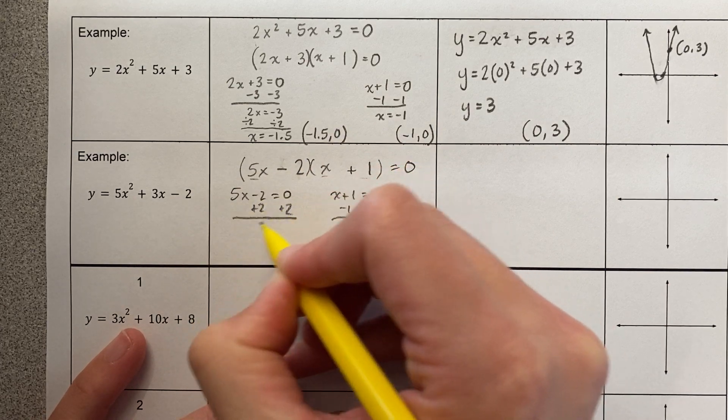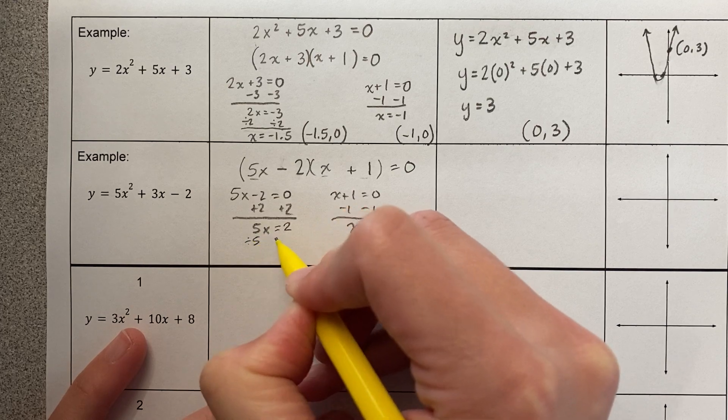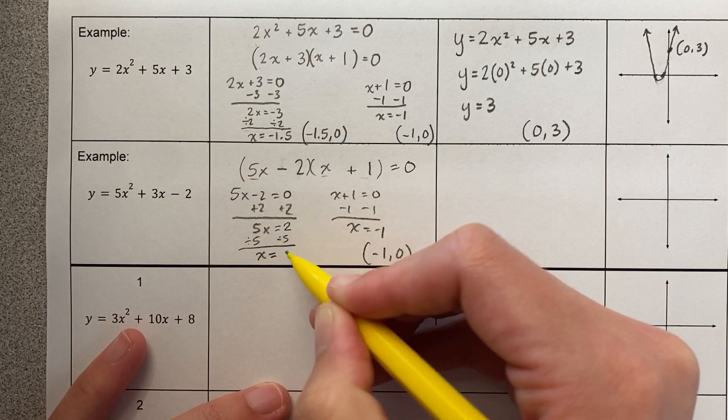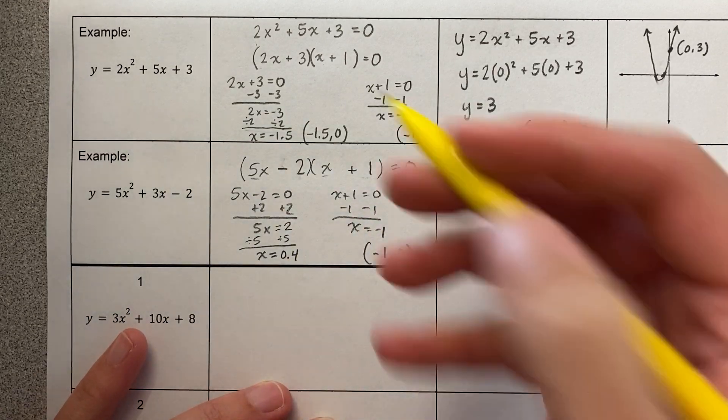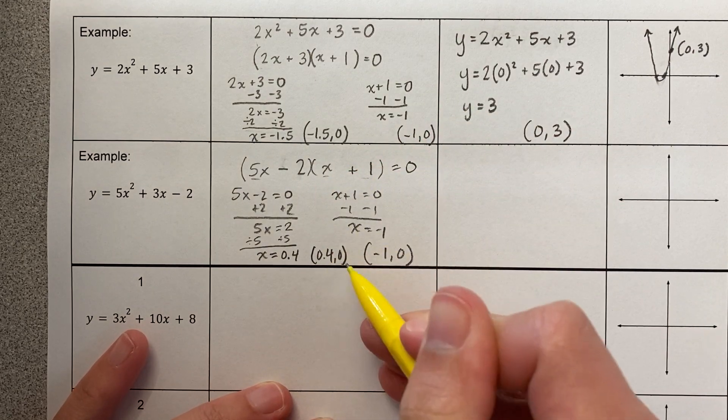Over here this is where I end up getting a decimal, which is fine, we are unconcerned, we are using our calculator if we need to. You can either write two fifths or you can write it as a decimal, it doesn't matter, it's the same.